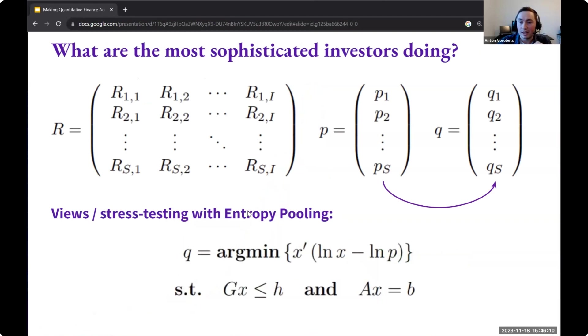So then the question is, what are the most sophisticated investors then starting to do? First of all, they use fully general Monte Carlo distributions. So you can imagine here that you have a matrix R, where in each column you have the individual assets. So this could be Facebook, Apple, Google, if it's a stock portfolio. And then along the rows, you have joint scenarios for these assets.